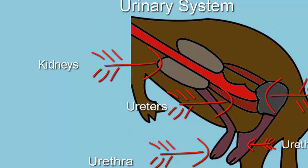The ureters are tubes that transport urine from the kidneys to the bladder.